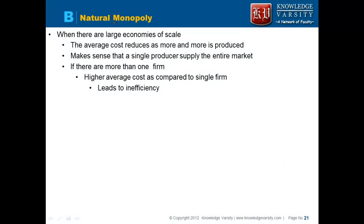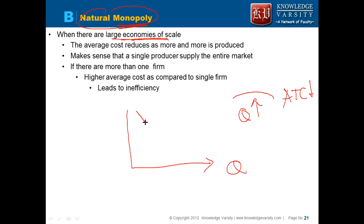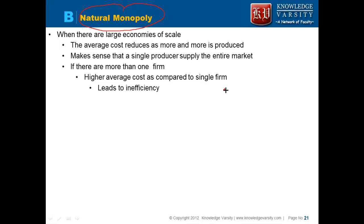A natural monopoly is when, as quantity increases, your average total cost is reducing. This happens when there are large economies of scale — as you increase quantity, the average cost keeps reducing. It makes sense to have only a single producer supplying the entire market, because if there are more than one firm, the combined cost will be more than a single firm, leading to inefficiency.